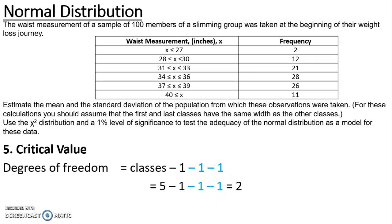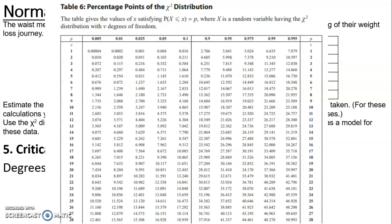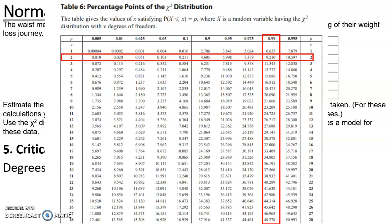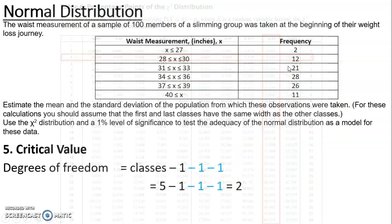For questions involving the normal distribution, sometimes you will have to estimate both parameters, sometimes just the mean, other times just the standard deviation. That gives me degrees of freedom of two. So I look on table six — the percentage points of the chi-square distribution at degrees of freedom two. Remembering the significance level is 1%, so 100 minus 1 is 99, I look down the 0.99 column. Where that overlaps at two degrees of freedom gives a critical value of 9.210.